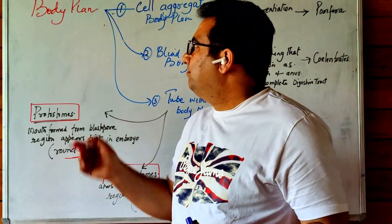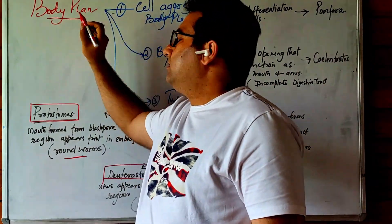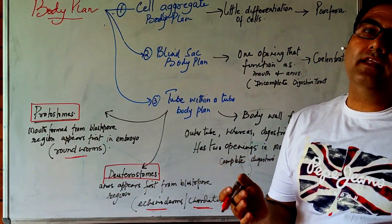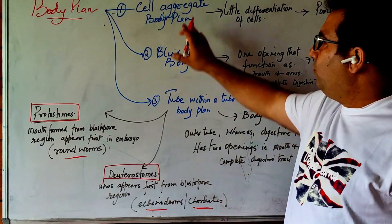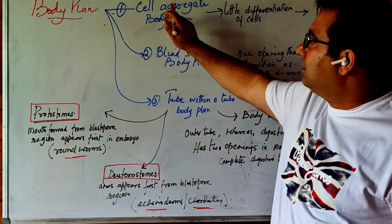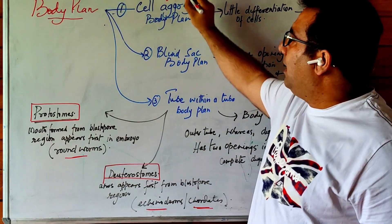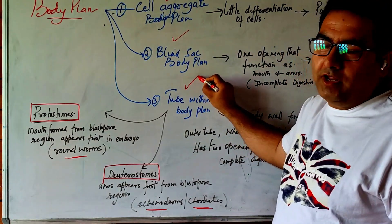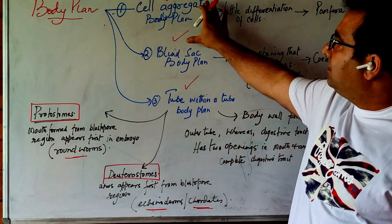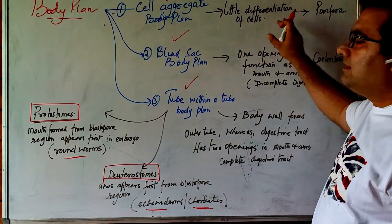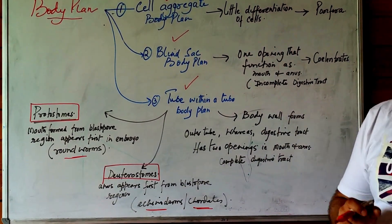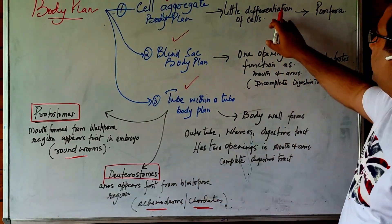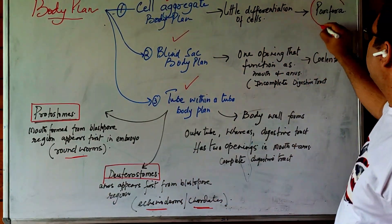Now we shall discuss the body plan. There are three kinds of body plans: the cell aggregate body plan, the blind sac body plan, and the tube within a tube body plan. In the cell aggregate body plan, there is little differentiation of cells, and this plan is seen in Porifera.